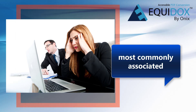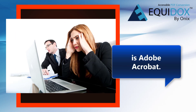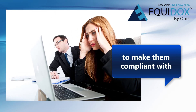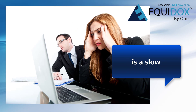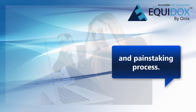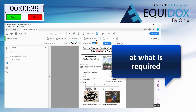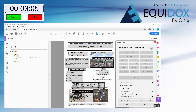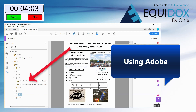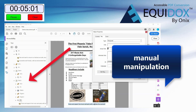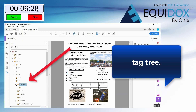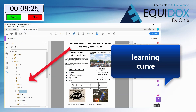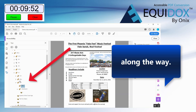The tool most commonly associated with PDF documents is Adobe Acrobat. But remediating PDFs in Adobe to make them compliant with Web Content Accessibility Guidelines is a slow and painstaking process. Using Adobe to remediate PDFs involves the manual manipulation of a complex tag tree. It is time consuming, there is a steep learning curve, and there is a much higher chance of the user making errors along the way.